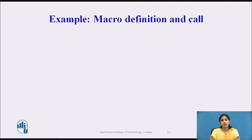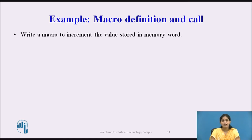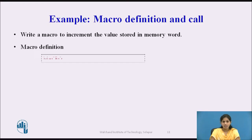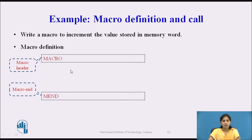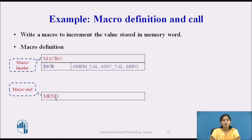Now we see an example of macro definition and macro call. The task is to write a program to increment a value stored in a memory word. First, we define the macro definition, which is enclosed between the macro header statement and the macro end statement — here the macro header uses the word MACRO, and the macro end statement uses MEND.